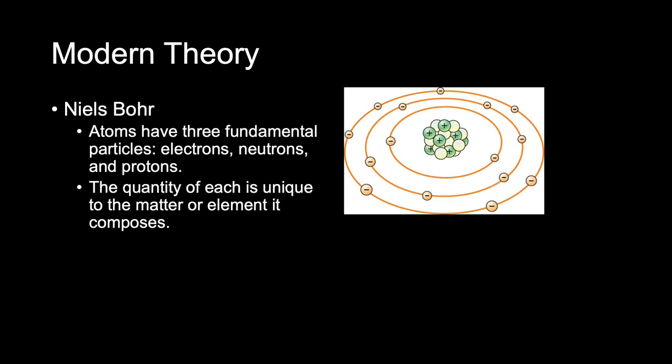The 20th-century Danish physicist Niels Bohr refined Rutherford's work, bringing us to the theory and model of the atom with which we are most familiar. The atom is considered the basic building block of matter. Bohr's theory describes the atom as having three fundamental components: electrons, neutrons, and protons. These particles are generally referred to as the fundamental particles. The quantity of each is unique to the matter or element it composes — a hydrogen atom is different from lead, which is different from tungsten, and so on. All of these can be found in the periodic element chart.